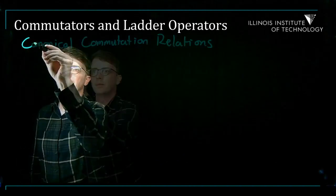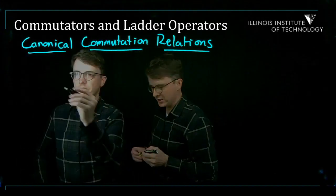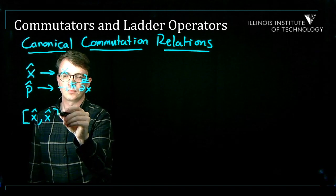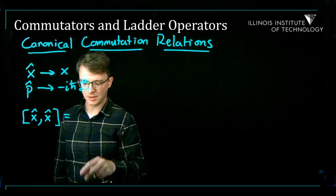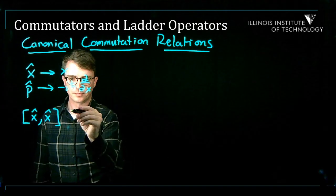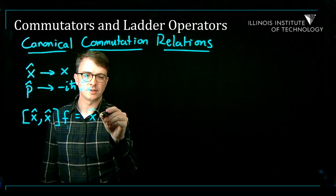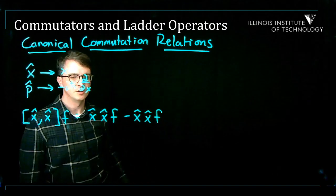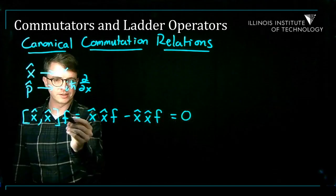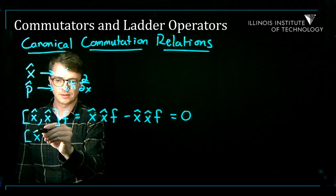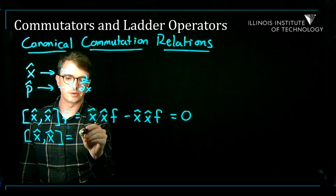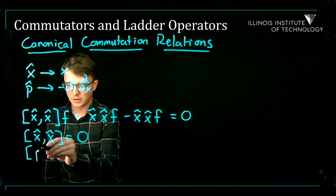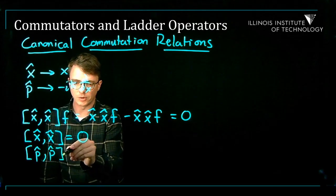Let's evaluate the canonical commutation relations. The commutator [x-hat, x-hat] equals x-hat x-hat minus x-hat x-hat, which is obviously zero for any function — an operator always commutes with itself. Similarly, [p-hat, p-hat] equals zero.